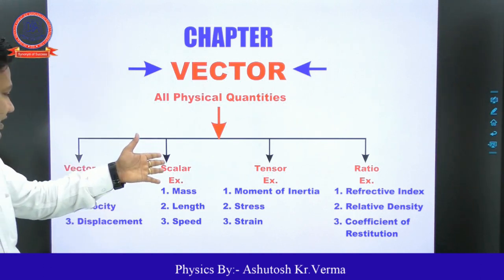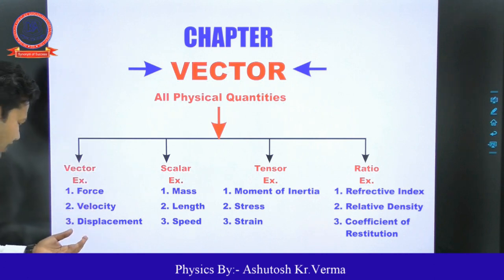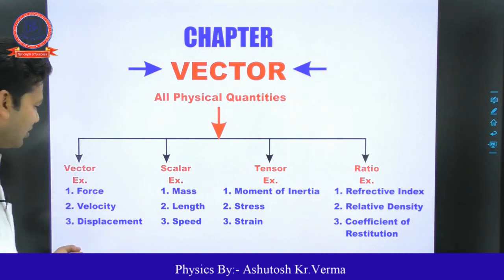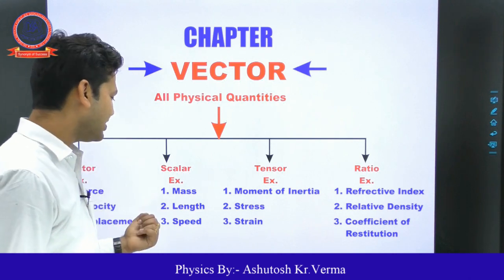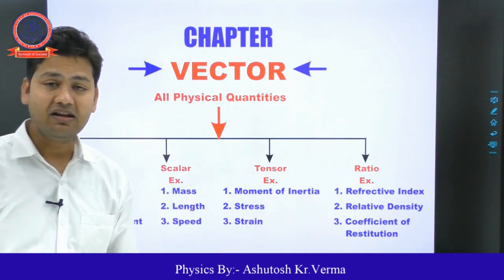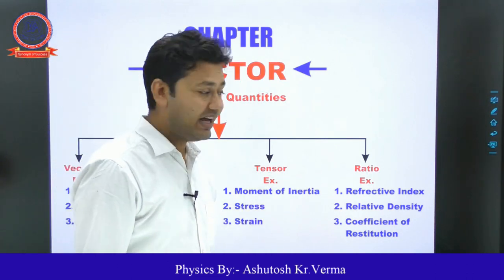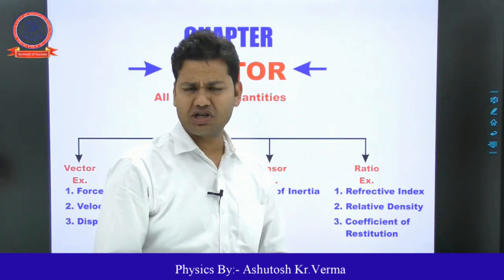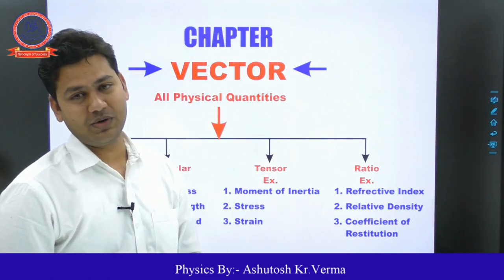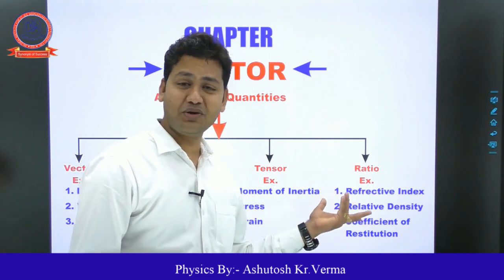Actually, physical quantities are categorized into four types: vector, scalar, tensor, and ratio. In the vector category: force, velocity, and displacement. In scalar: mass, length, and speed. Moment of inertia, stress, and strain are tensors. Refractive index, relative density, and coefficient of restitution are ratio quantities. These are all physical quantities and should be counted accordingly.